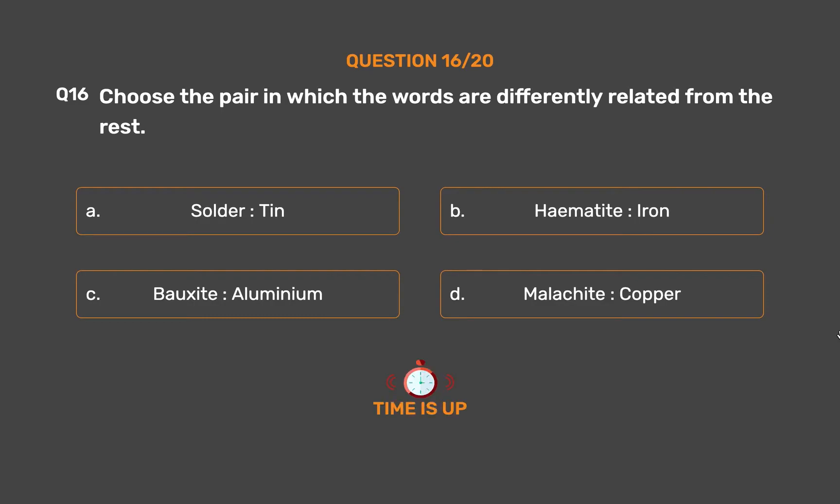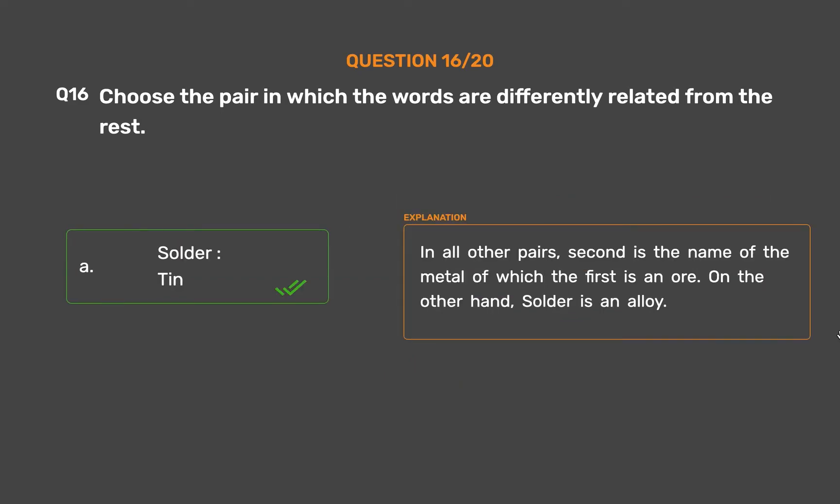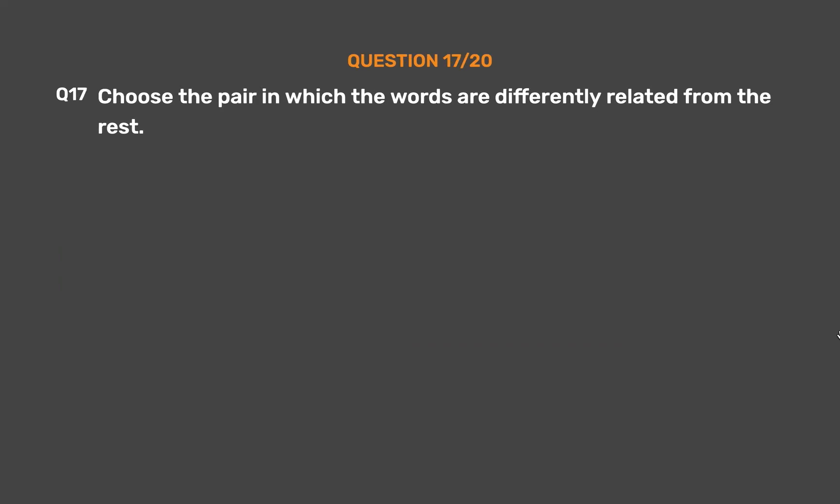The correct answer is Option A: Solder, Tin. In all other pairs, the second is the name of the metal of which the first is an ore. On the other hand, solder is an alloy.